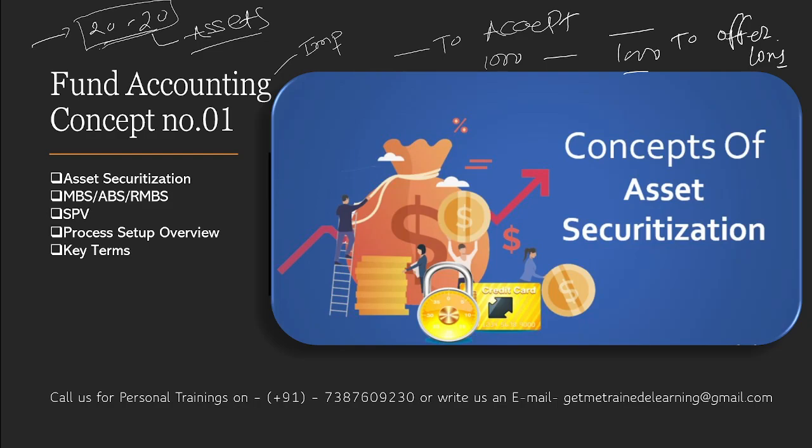Deposits are liabilities for a bank — when a depositor deposits an amount, the bank is entitled to pay that liability whenever the depositor requests withdrawal. Similarly, when the bank issues a loan to a borrower, that loan amount is treated as an asset for the bank. For the borrower, the loan amount is a liability — that's why the borrower pays it back on a monthly basis as principal and interest payment.